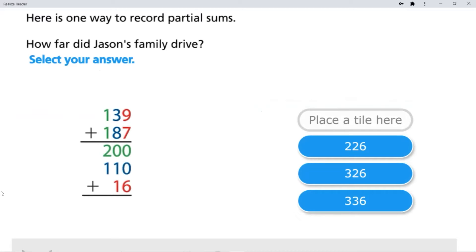Select your answer. So here we can see that they added the hundreds. That gave them 200. They added the tens. 30 plus 80 gave them 110. And they added the ones which gave them 16. So 200 plus 110. That's 310. 310 plus 16 is 326.